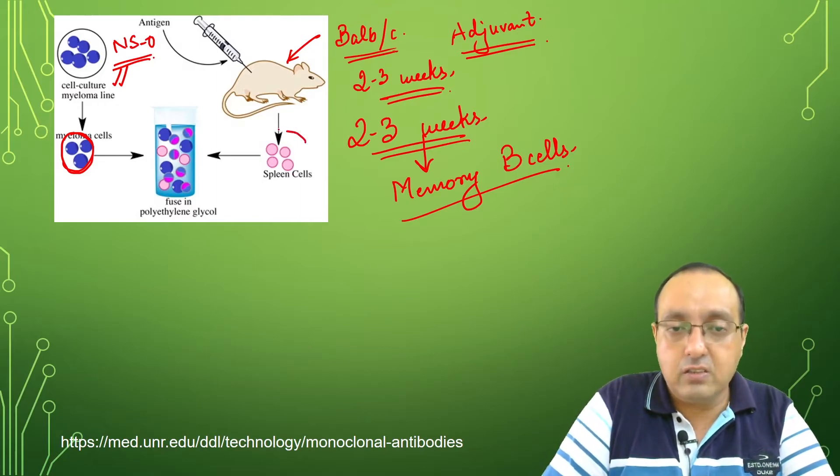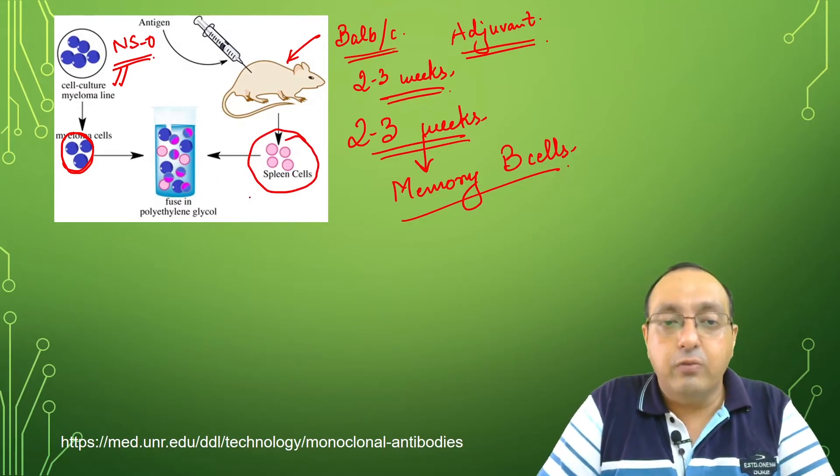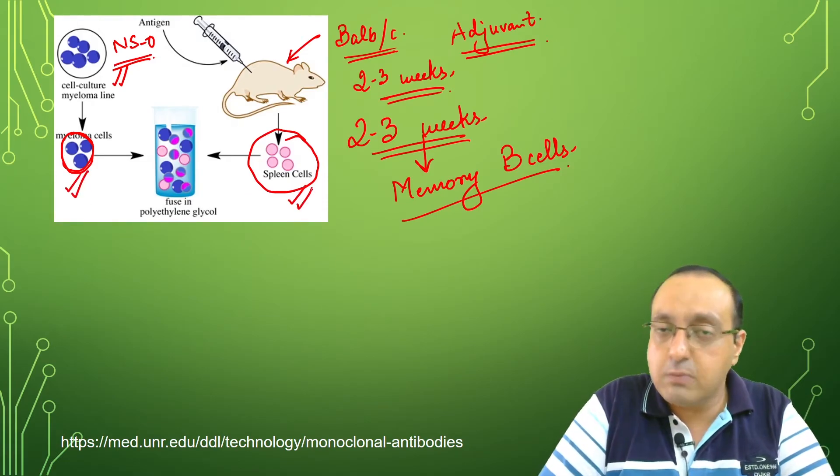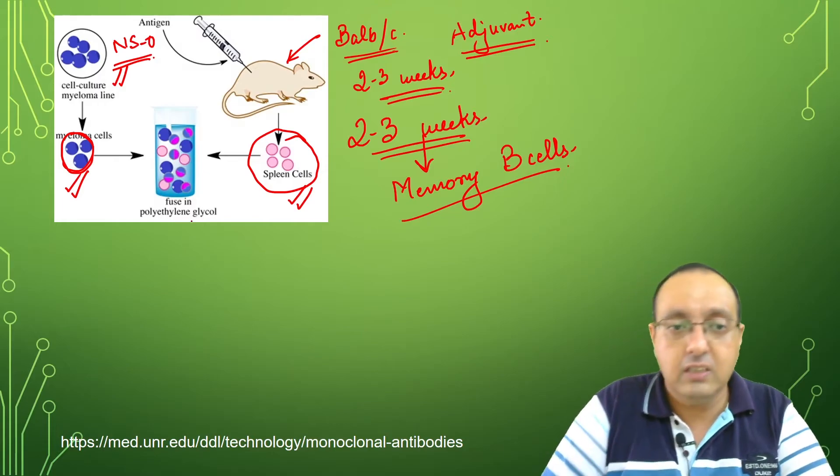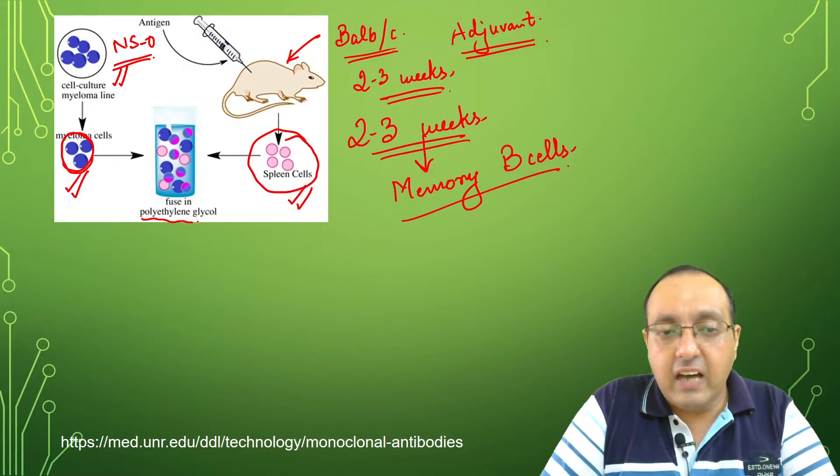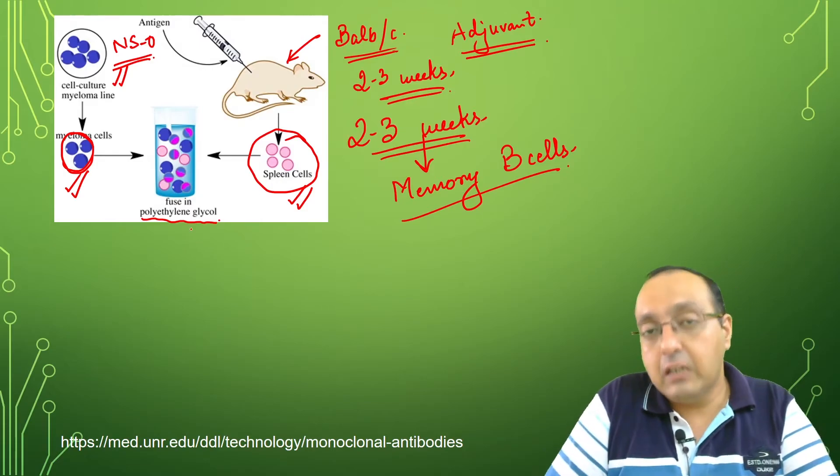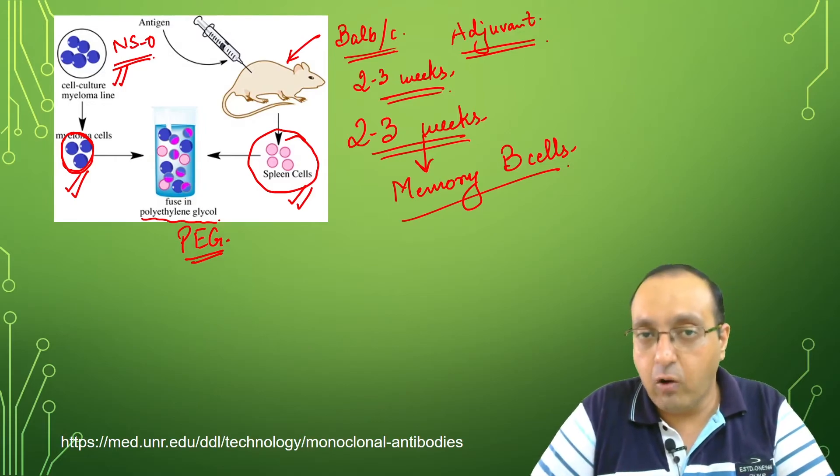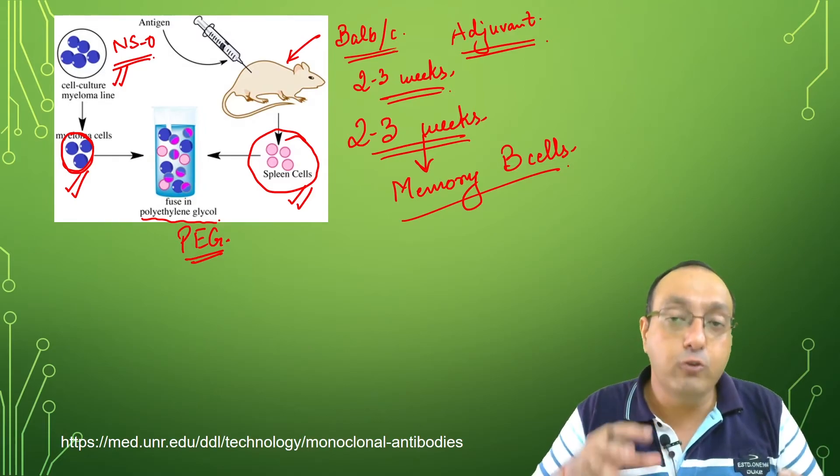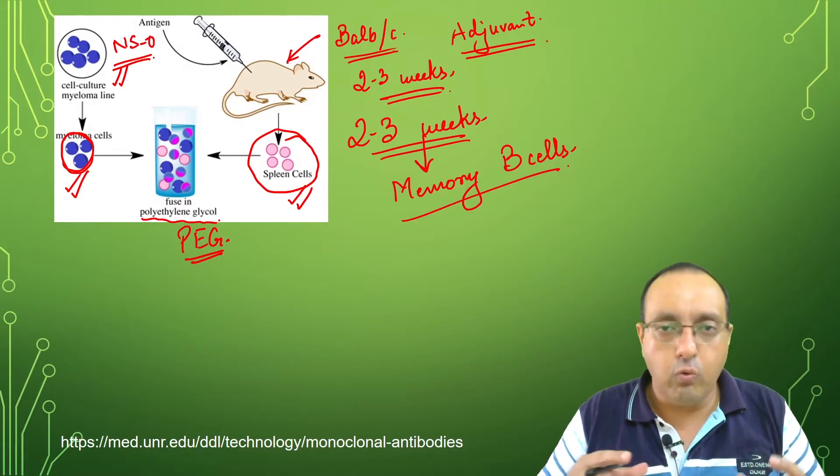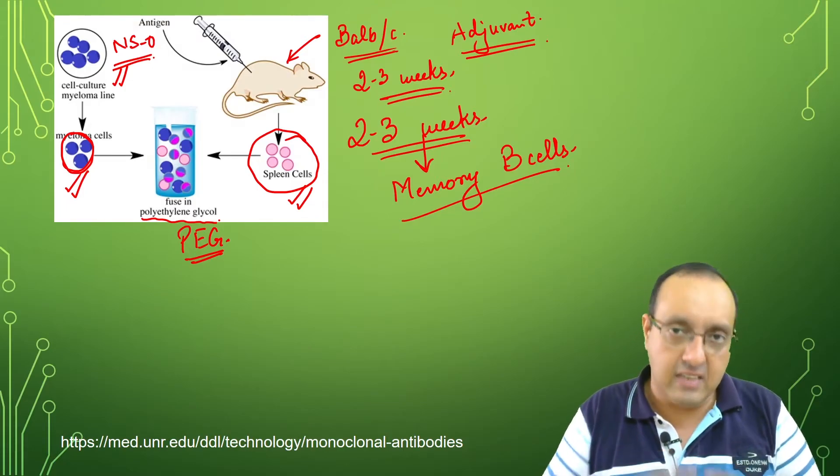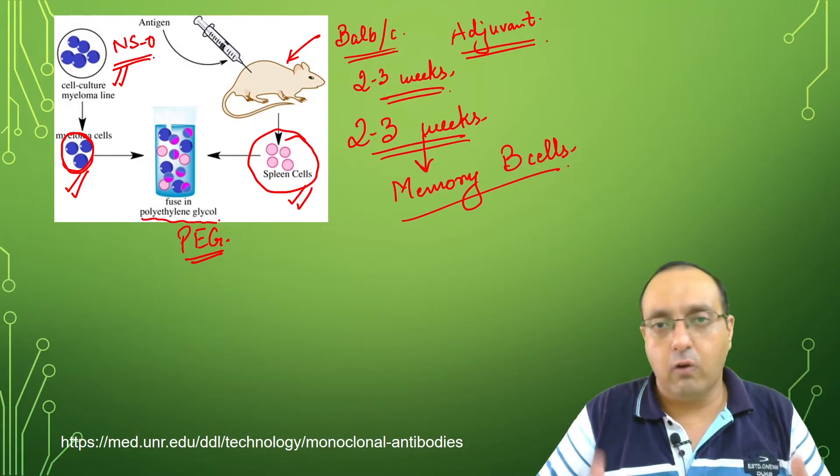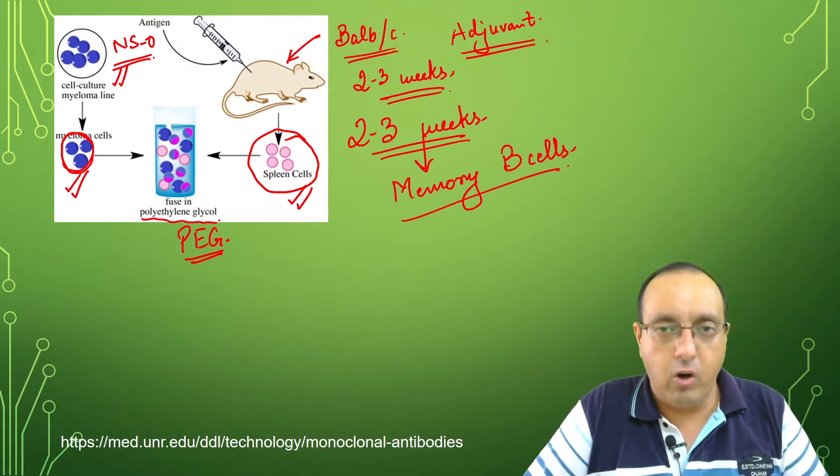We fuse the myeloma cells, the cancerous cells, as well as the spleen cells which produce antibodies, with polyethylene glycol or PEG, followed by centrifugation. PEG is an agent which helps in cell fusion. What we get is an immortalized cell line with both myeloma and spleen cell configuration. They are immortal and produce the antibodies we want.